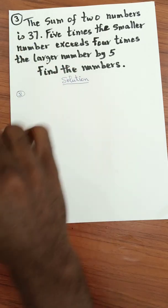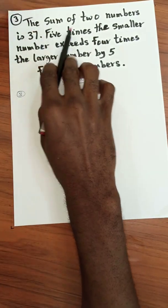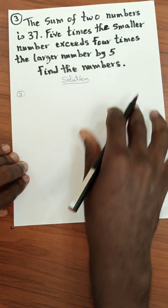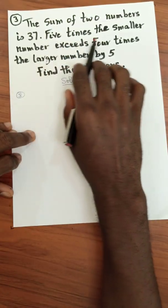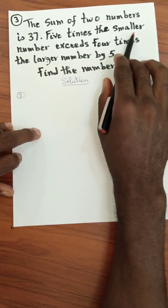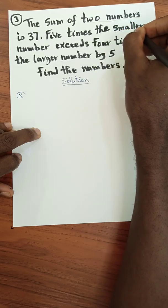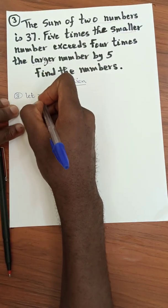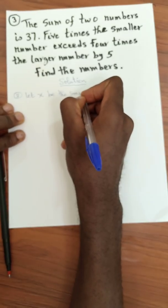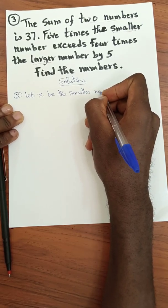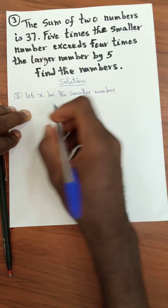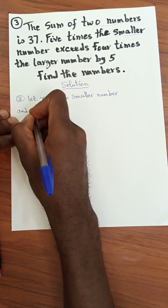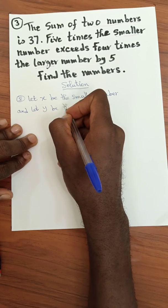Let's analyze the problem. The sum of two numbers — we don't know those two numbers, but we know we have a smaller number and a larger number. So let x be the smaller number.